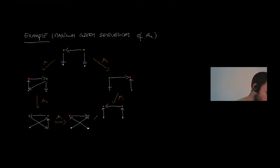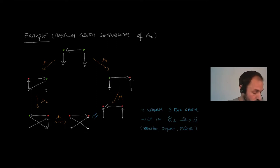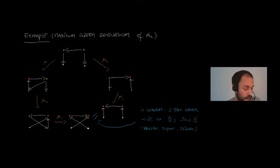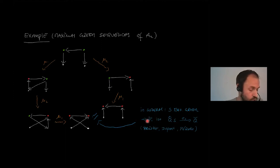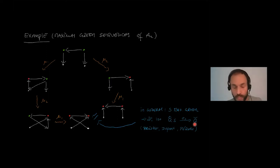These two resulting quivers are isomorphic as ice quivers. This is a general theorem due to Nagata, Dupont, and Pérotin: whenever we have a maximal green sequence S, there exists a unique isomorphism between the reddened quiver and the initial quiver when co-framed.